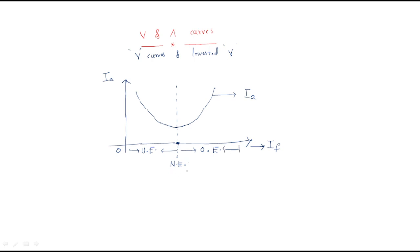Normal excitation means the reactive power required is enough to run the machine. Under excitation means the field current doesn't have enough to maintain the voltage profile. Over excitation means we have more excitation than required.